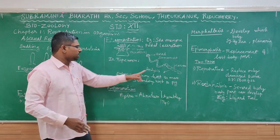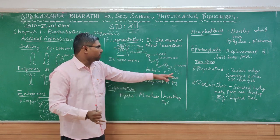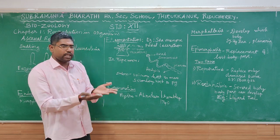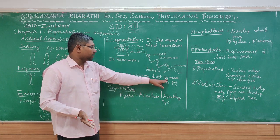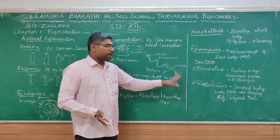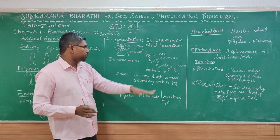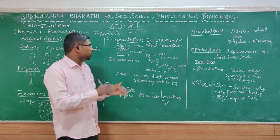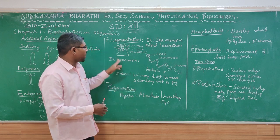Apolysis is the breakup of the mature proglottid from the body. The mature proglottid contains both male and female reproductive organs. The embryo is formed from male and female gametes. The proglottid then passes to a primary host and a secondary host to complete its life cycle.